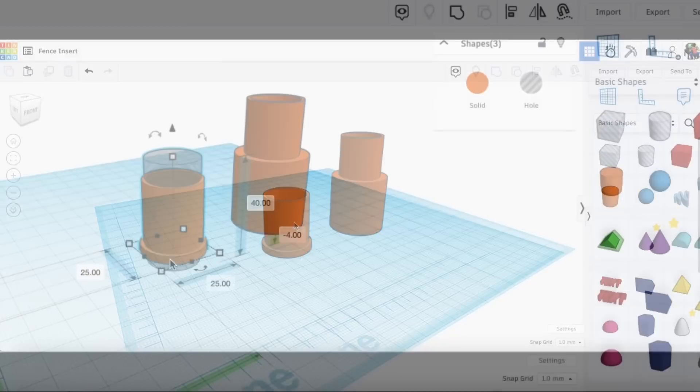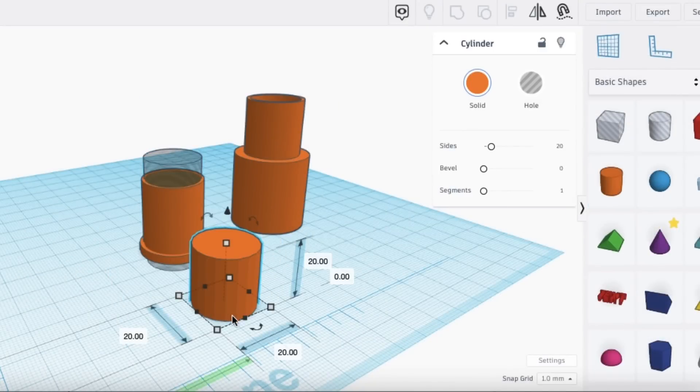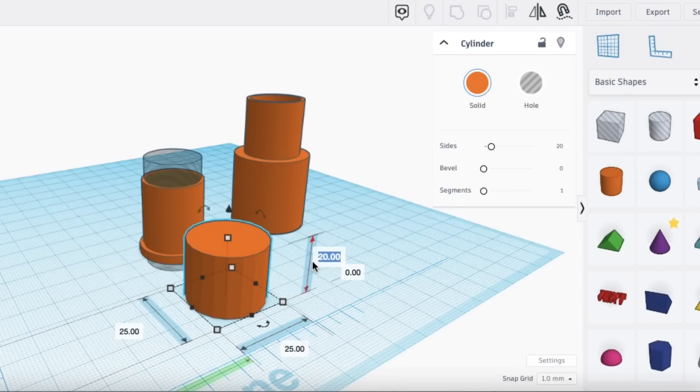Tinkercad.com is a free online CAD program that's really easy to use. I'll show you how I made one of these inserts. I dragged the cylinder over and made it 25 millimeters in diameter, then lowered it to 3 millimeters to form the lip of the insert.